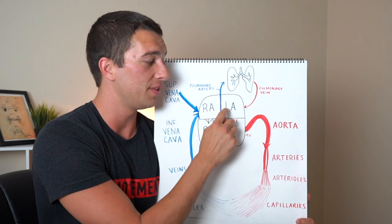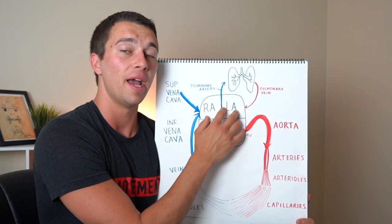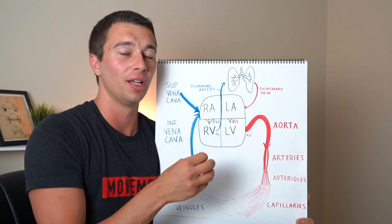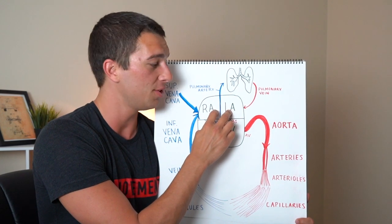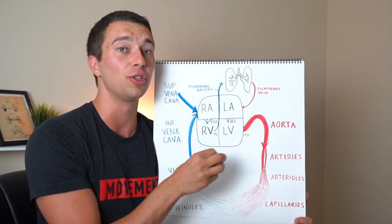All right so starting up here we have the atria. They're smaller and when we have the heart going lub-dub lub-dub, the lub is going to be the atria contracting and then the dub is the ventricles contracting.